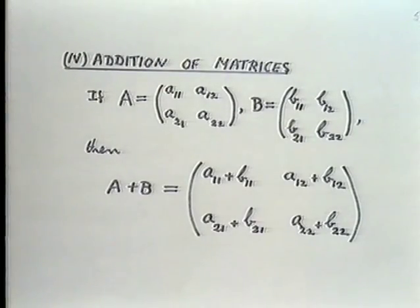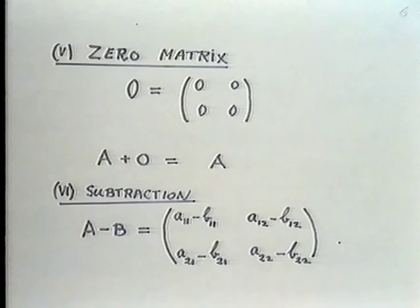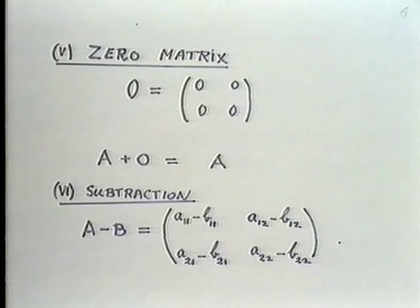Next we come to the problem of adding two matrices. We take two matrices A and B, and we shall say that their sum A plus B is the matrix whose coefficients are obtained by adding corresponding coefficients of A and B. We define the zero matrix as the matrix all of whose coefficients are equal to zero, and this matrix has the property that A plus zero equals A, as one would expect. Also, it is easy to see that subtraction follows, and we must define A minus B as the matrix obtained by subtracting the coefficients of B from those of A.